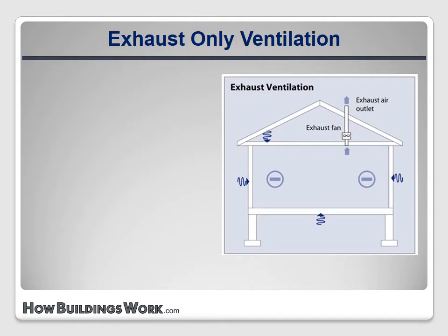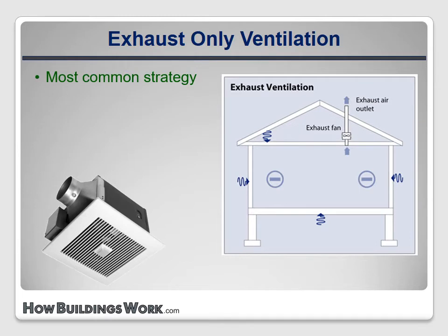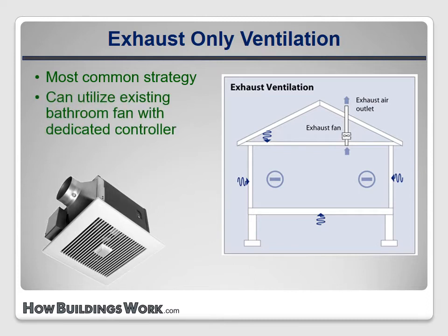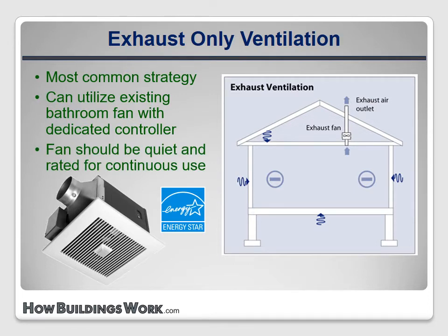Exhaust only ventilation is by far the most common strategy. As you can see from the diagram, as the fan pulls the stale air out of the house, it creates negative pressure. Wherever there are openings in the envelope, fresh outdoor air is pulled in. This strategy is usually accomplished with a bath fan, which serves as both local exhaust and whole building ventilation. In some cases, it can be done with an existing fan, but these are often not designed to run continuously. A new Energy Star labeled fan is a better choice, since it will be quieter, use less electricity, and be designed for continuous operation. These fans often have a higher flow rate than is required by the calculations, but that's good since we want them to have a high flow rate when being used as local exhaust fans to remove moisture when someone is taking a shower.